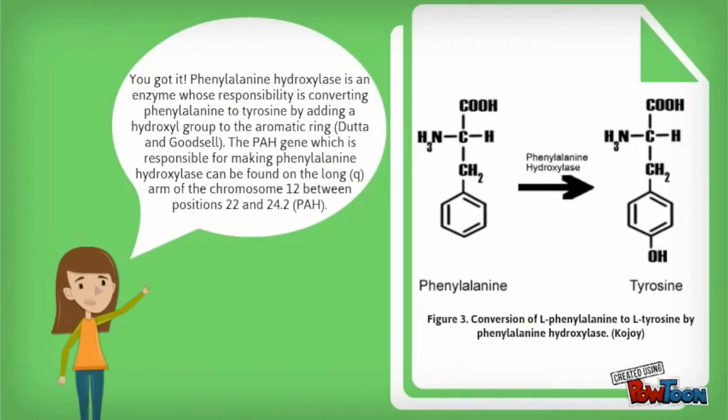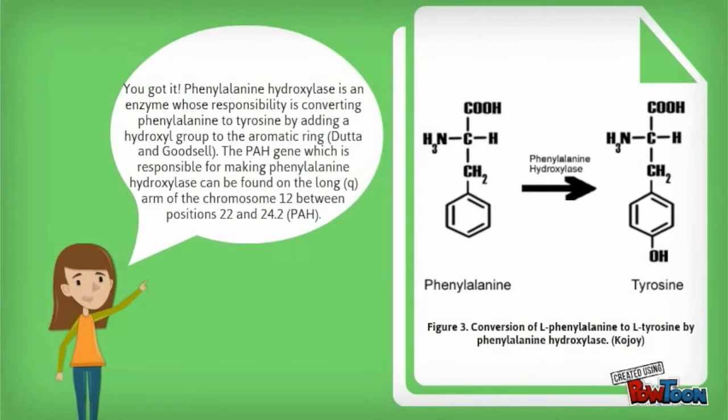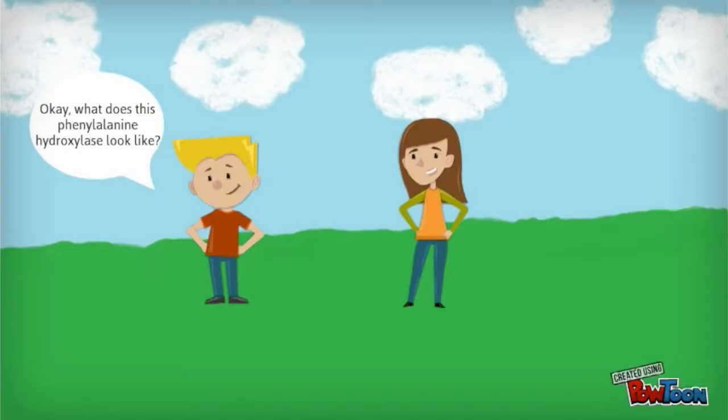You got it. Phenylalanine hydroxylase is an enzyme whose responsibility is converting phenylalanine to tyrosine by adding a hydroxyl group to the aromatic ring. The PAH gene, which is responsible for making phenylalanine hydroxylase, can be found on the long Q arm of the chromosome 12 between positions 22 and 24.2.